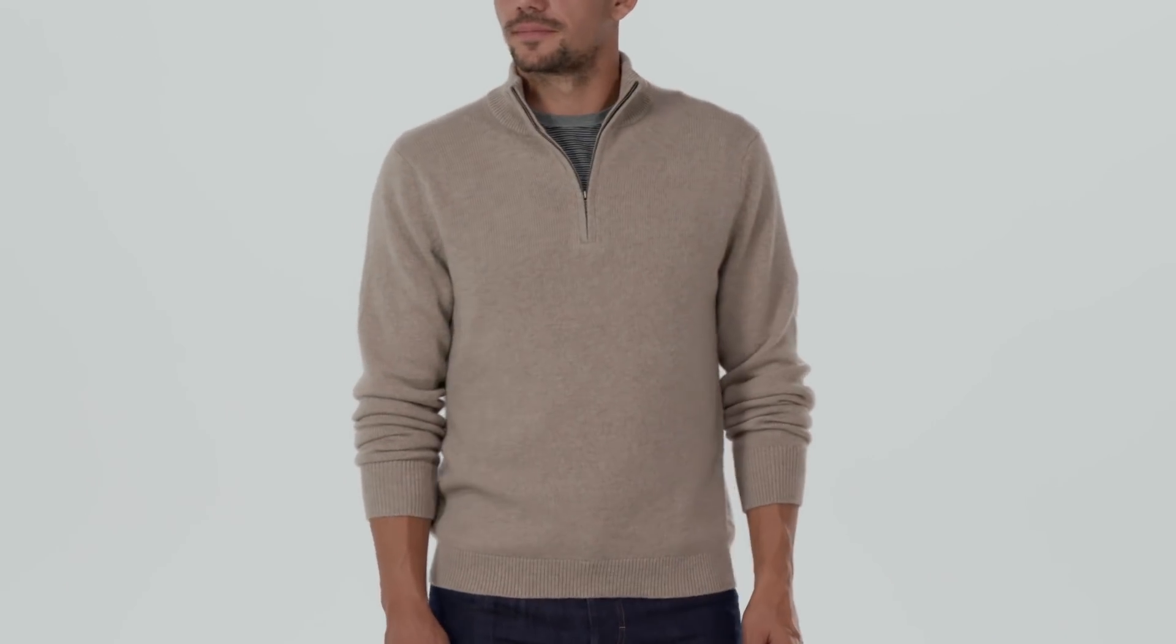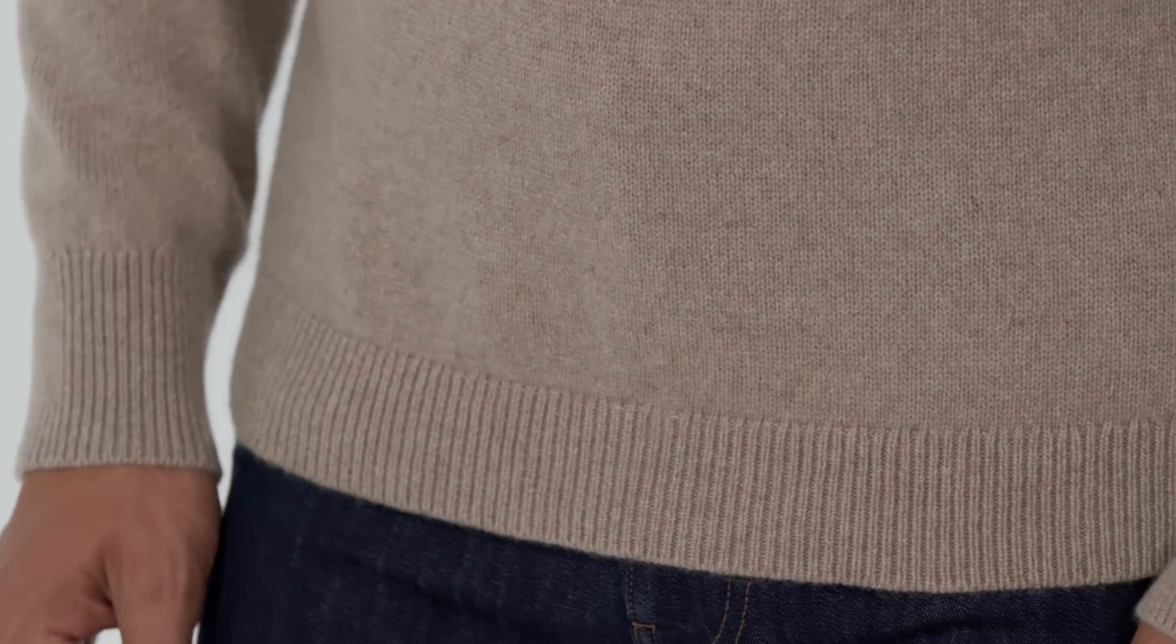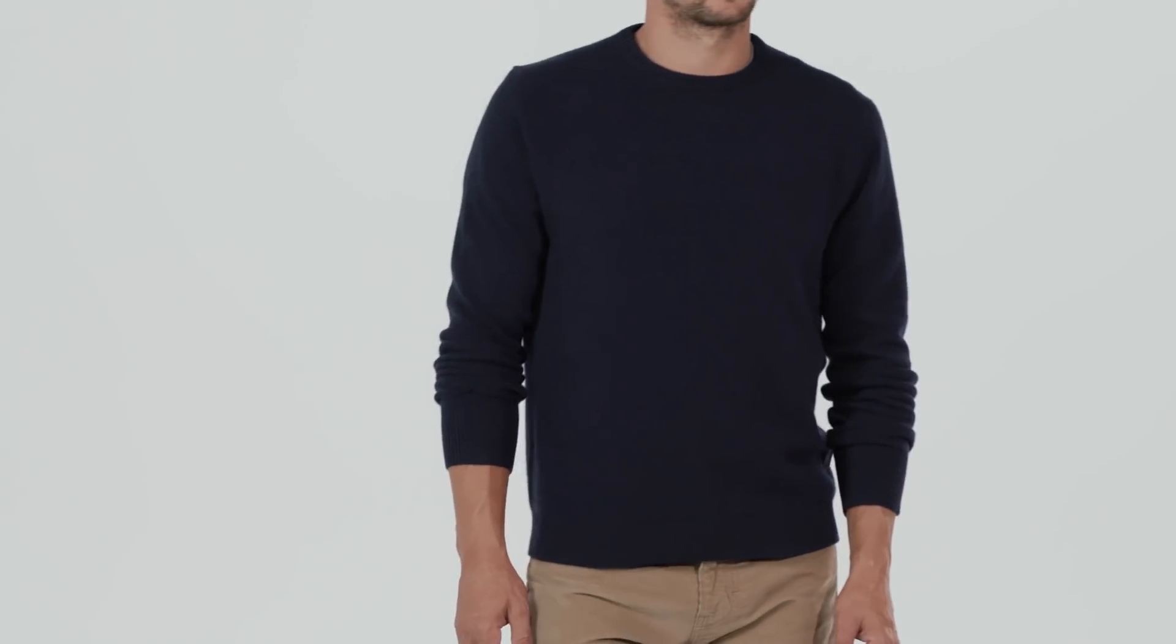The quarter zip features a quarter zipper, set in sleeves, and rib knit neck, cuffs, and hem. All three sweater styles are hip length and regular fit.